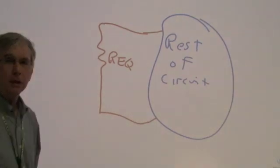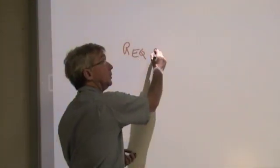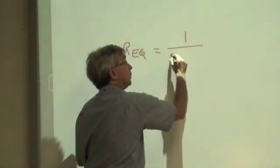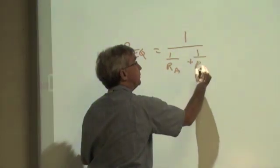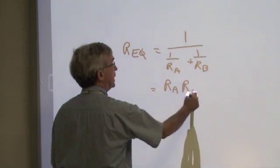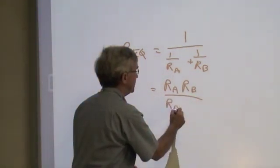And what is R equivalent equal to? Well, R equivalent is equal to 1 over 1 over RA plus 1 over RB. That algebraically is equal to RA RB divided by RA plus RB.